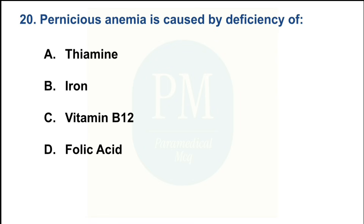Pernicious anemia is caused by deficiency of: Option A — Thiamine; Option B — Iron; Option C — Vitamin B12; Option D — Folic acid. The correct option is Option C: Vitamin B12.